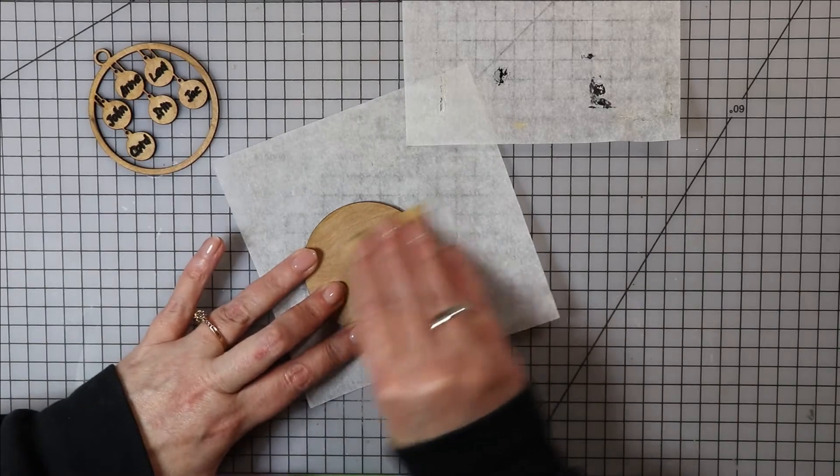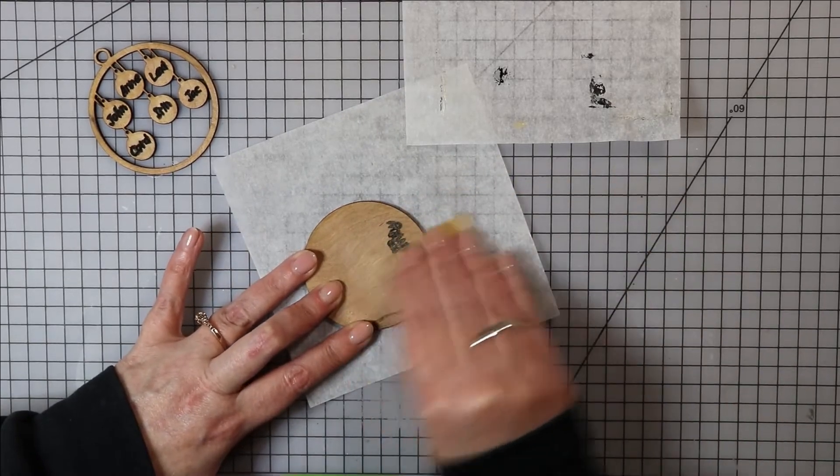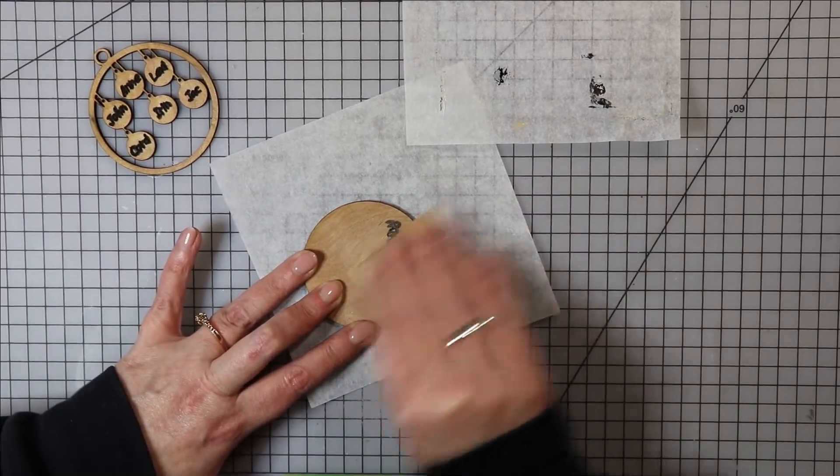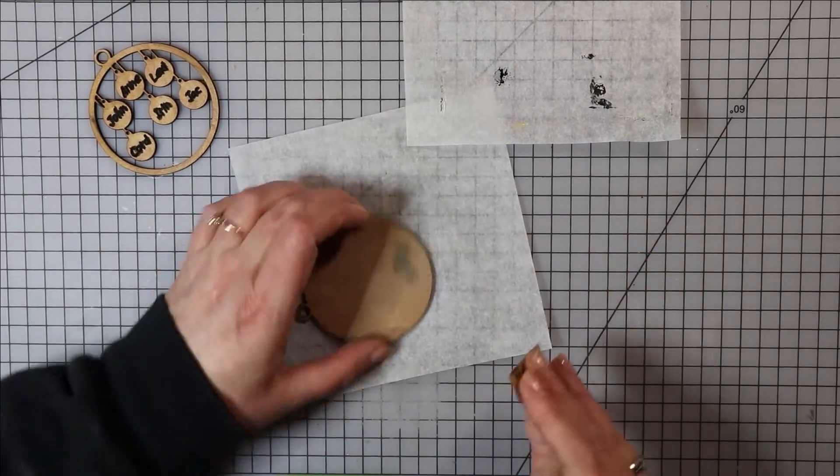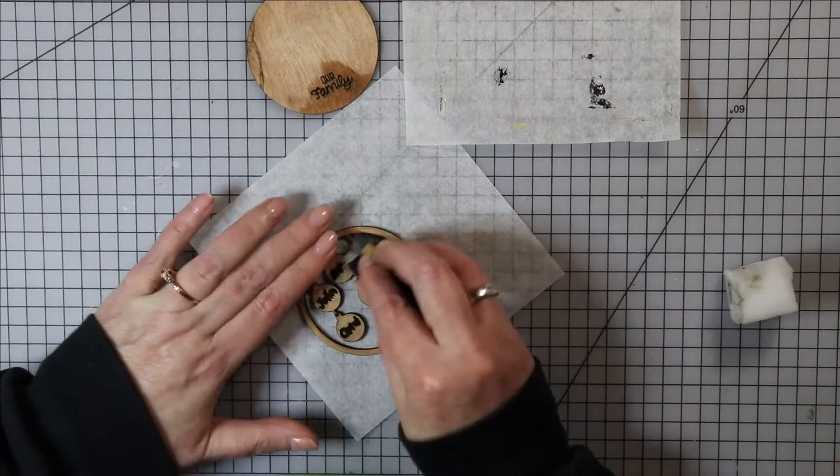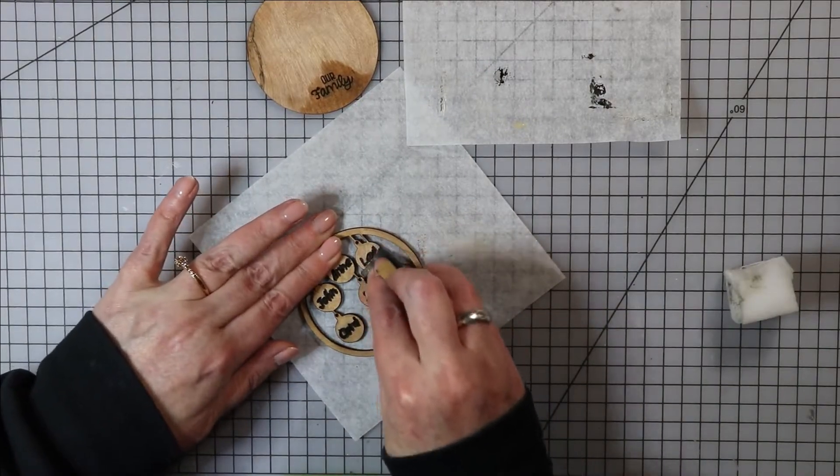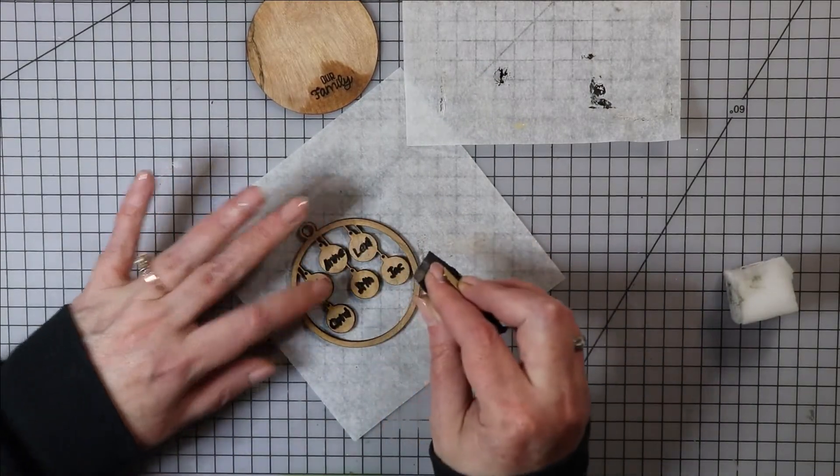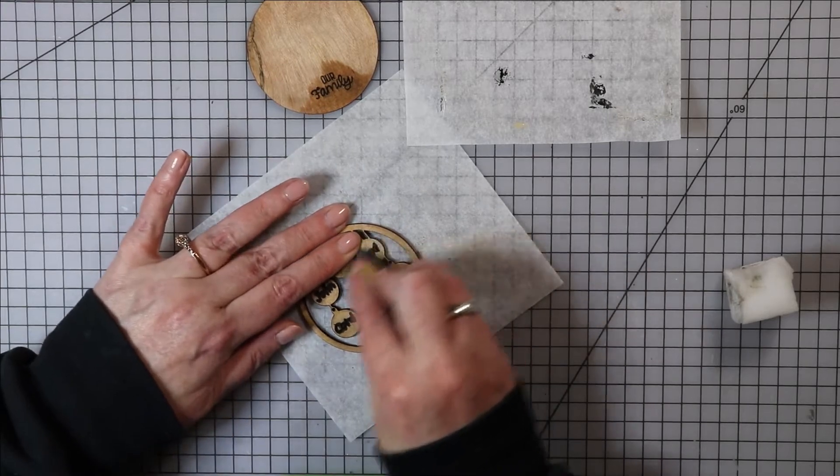If you made a mess like I did, once the paint is dry just give the ornament a really good sanding and you'll be able to remove any of the paint that slopped out of the engraved parts onto the face of the ornament. Again though, be really careful of those dangly bits.